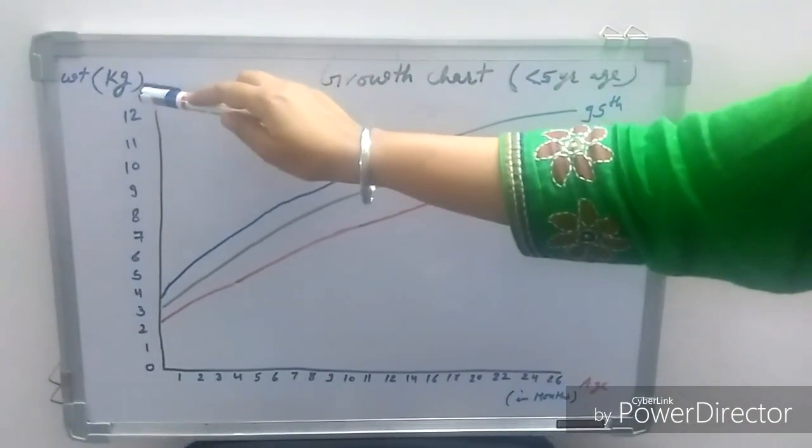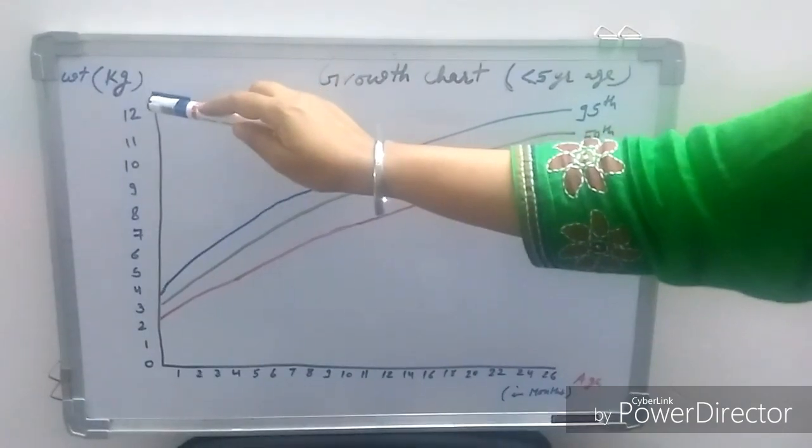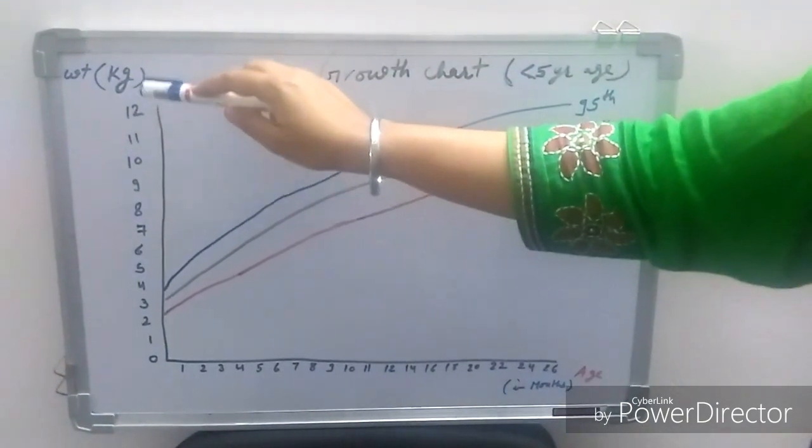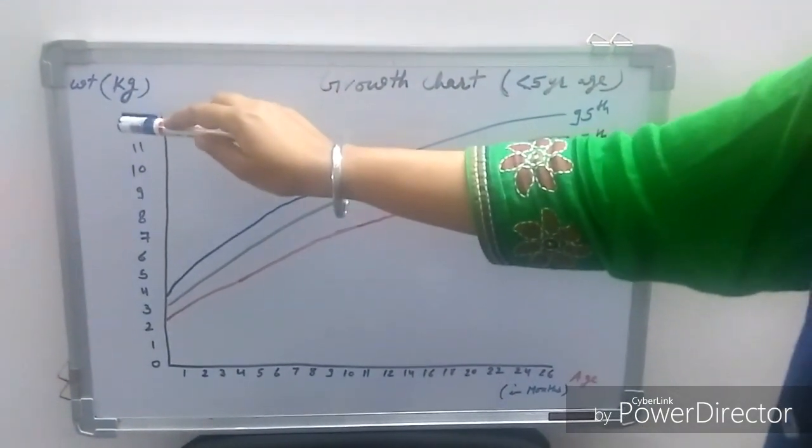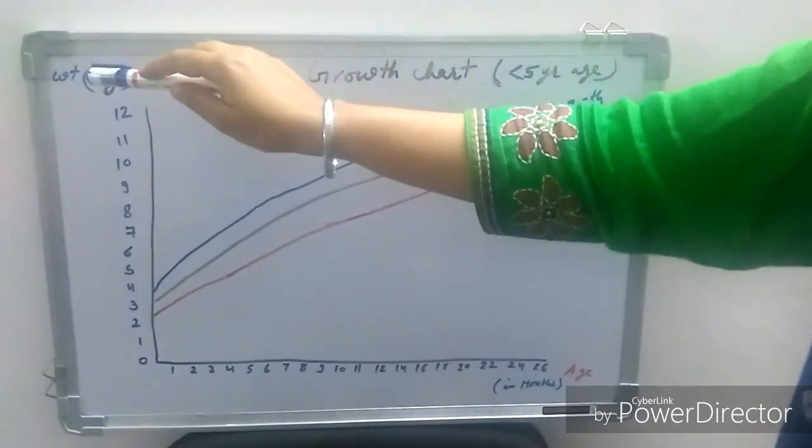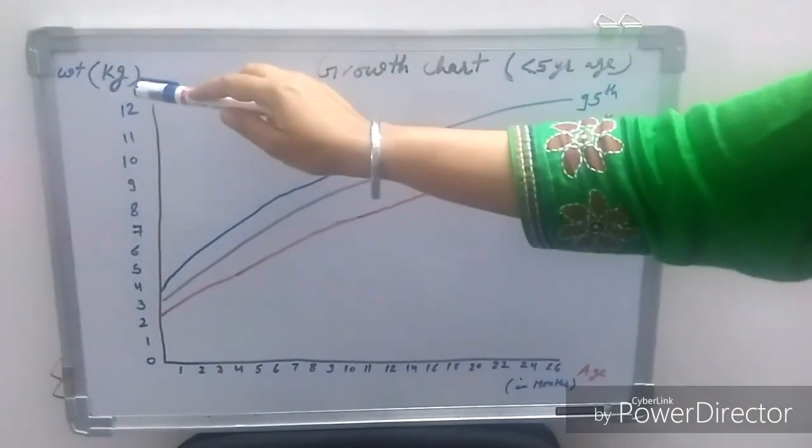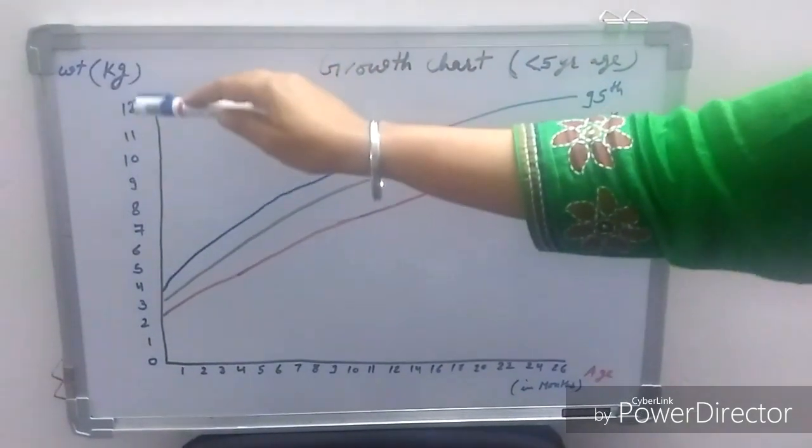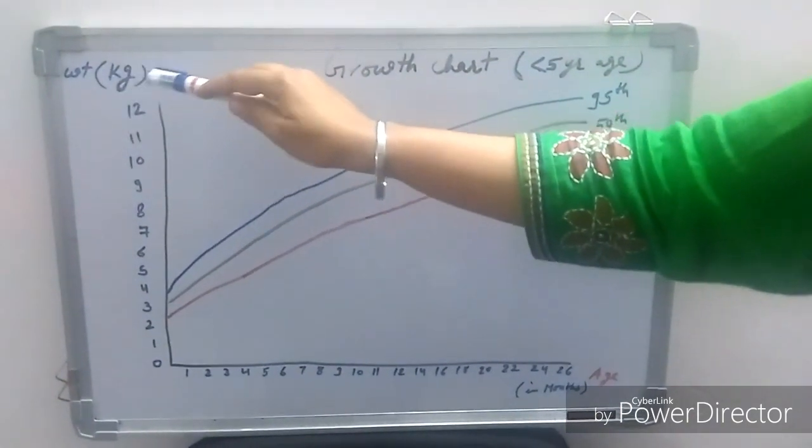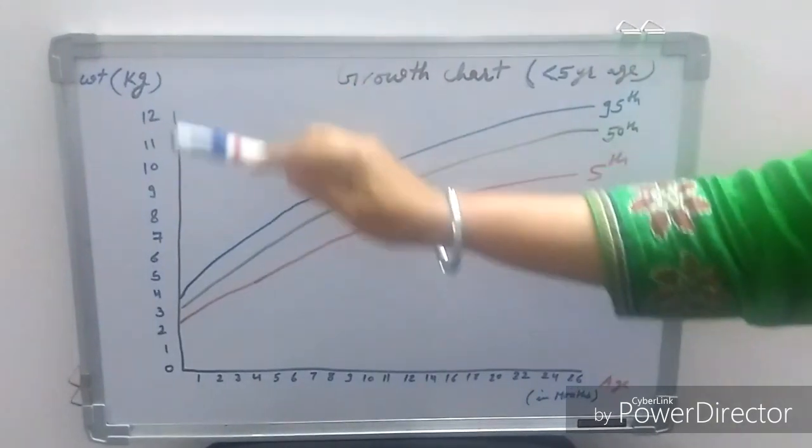Weight should be measured by the electronic weighing scale because sensitivity is good and 5 to 10 gram error occurs with the electronic weighing scale compared to the conventional weighing scale in which 100 to 200 gram variation can occur.